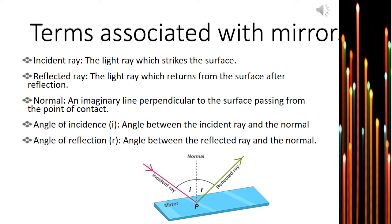Let's talk about the terms related or associated with mirror. The first one is incident ray. In the diagram, the pink color ray is the incident ray, which can be defined as the ray of light that falls on the surface of the mirror or refracting surface, and is called the incident ray.